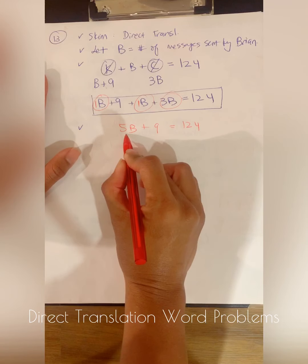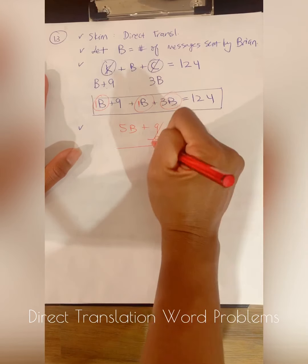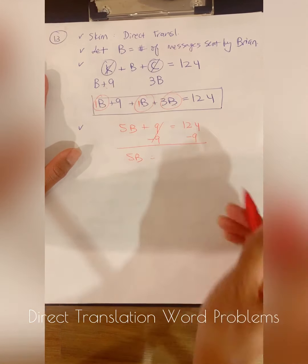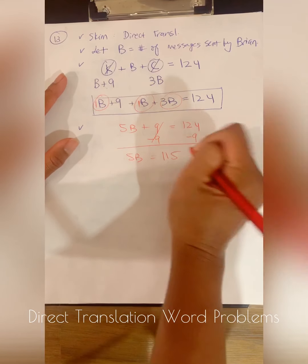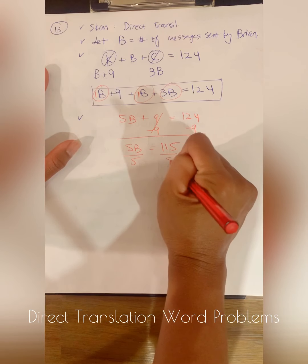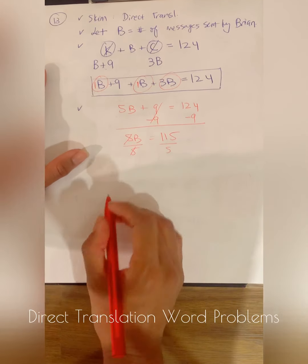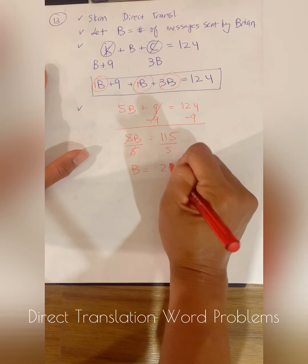I want to solve for B. I want B on the left side. So I'm going to subtract nine on both sides. Four, five, six, seven, eight, nine. Yep, I still use my fingers to count. 115. Divide both sides by the coefficient five. Five divided by five is just one. And this becomes 23.